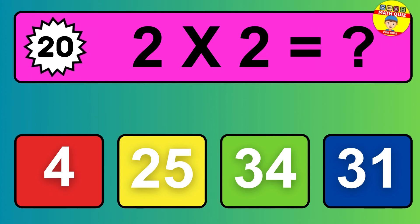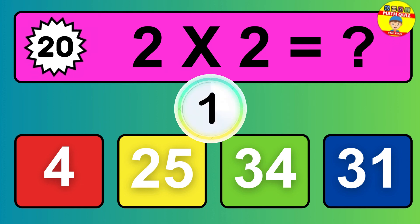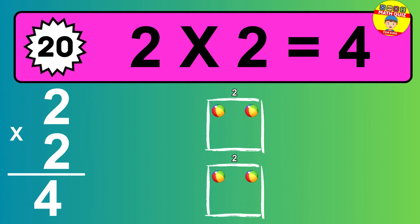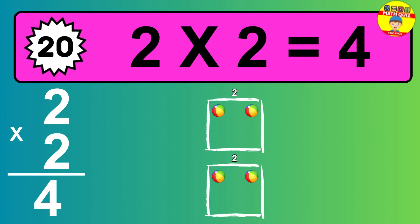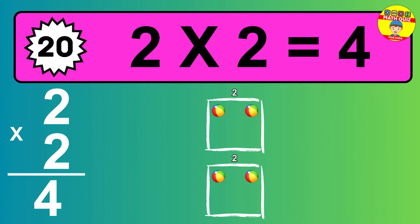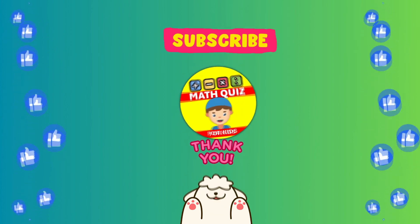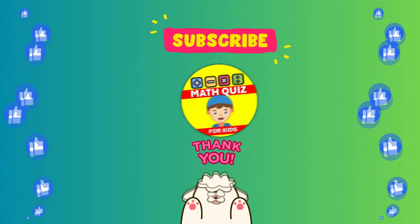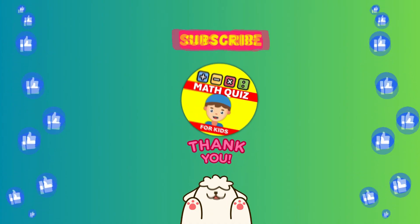Question 20. Two times two equals what? The answer is two times two is four. To calculate, we have two groups with two balls each one. So how many balls do we have? Four balls. How many did you get right? We bet you did awesome. Remember, practice makes perfect. Don't forget to click the like button if you had fun and subscribe so you can join us for even more math quiz adventures. Let's keep the math magic alive!